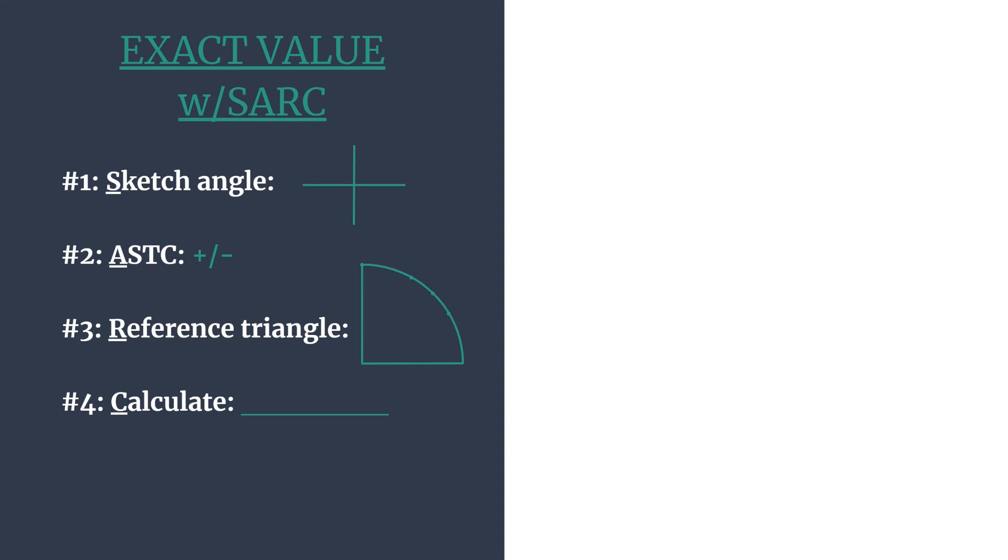A reminds us to think ASTC, and that will help us determine which trig functions are positive in each quadrant, and thus what the sign of our final answer should be. R stands for reference triangle,